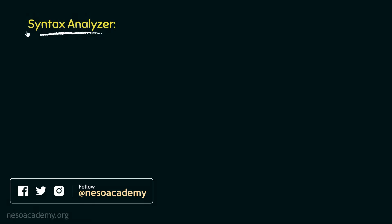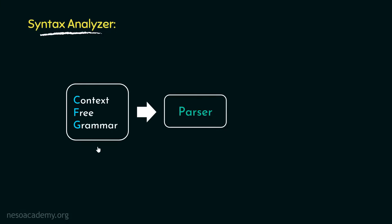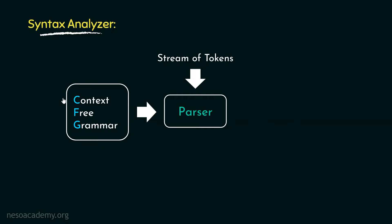We already know that a syntax analyzer or parser keeps different types of context-free grammars in its disposal. With the help of which, after receiving the stream of tokens from the lexical analysis phase, the parser produces the parse tree. Now these context-free grammars need to be of certain form to be processed by the parser — we will get to that later. Today, we will mainly observe the different ways based on which a particular string of terminals can be derived from a context-free grammar.